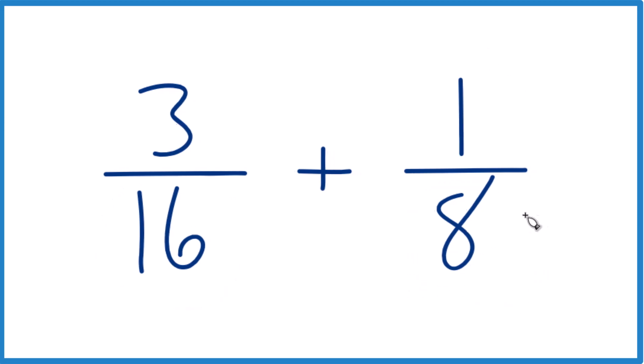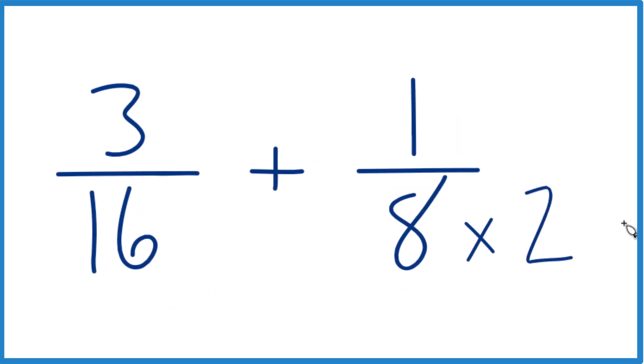So I could just double this, like 8 times 2, that's 16. I do need to also double the numerator here. 2 divided by 2 is 1, so I'm just multiplying by 1, I don't change the value.